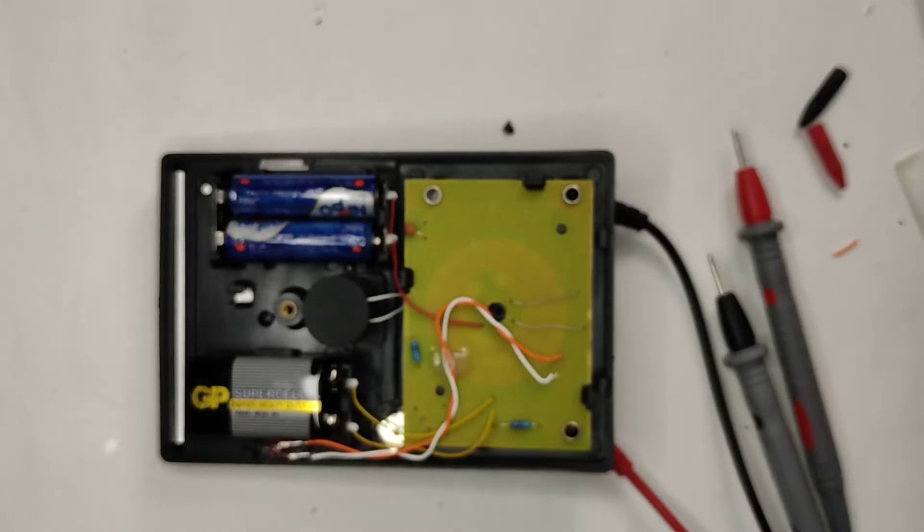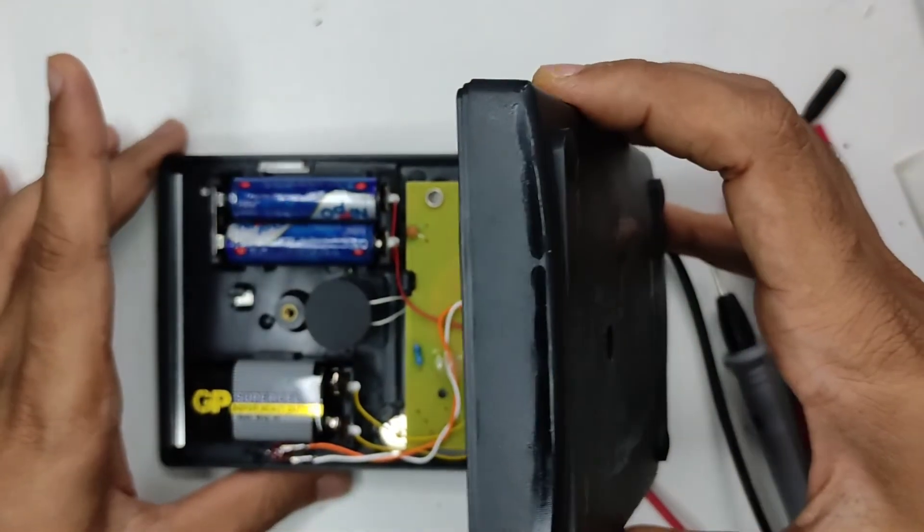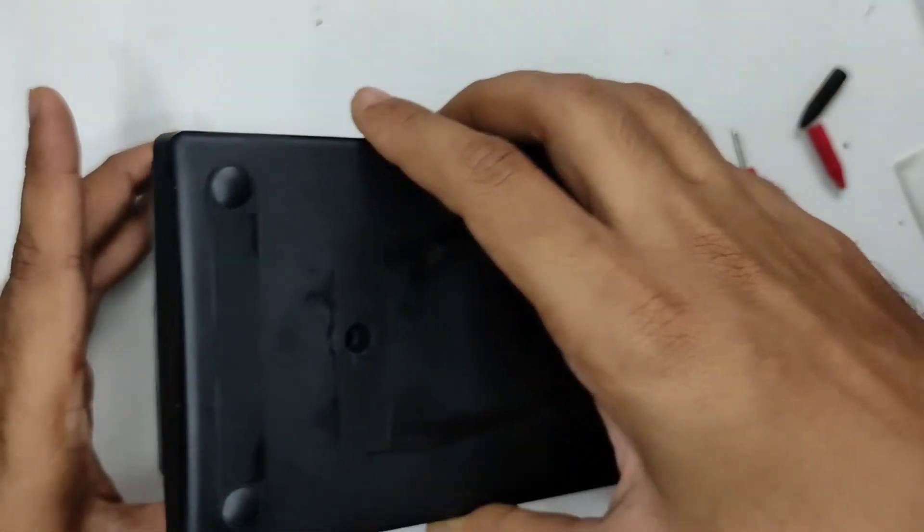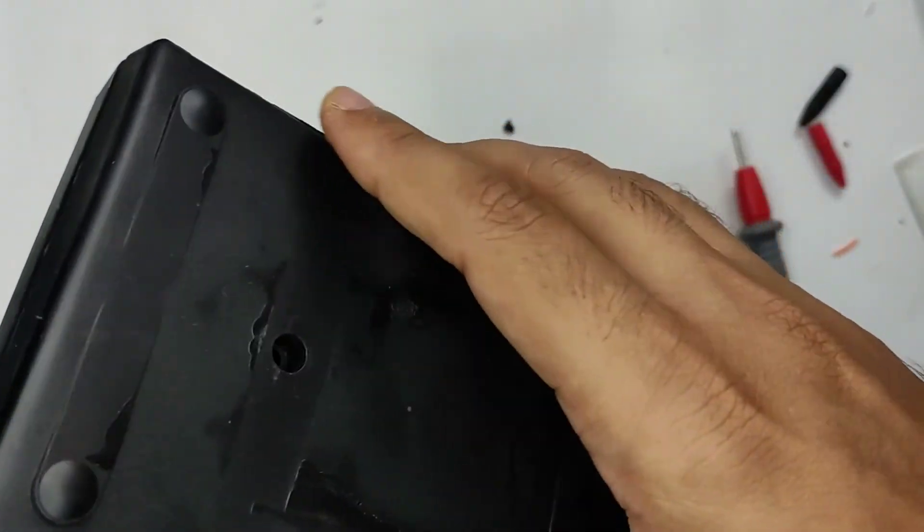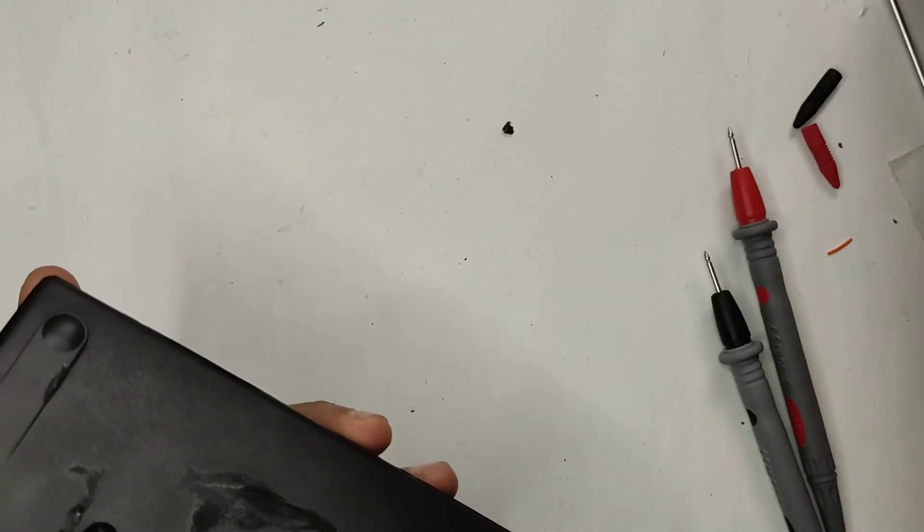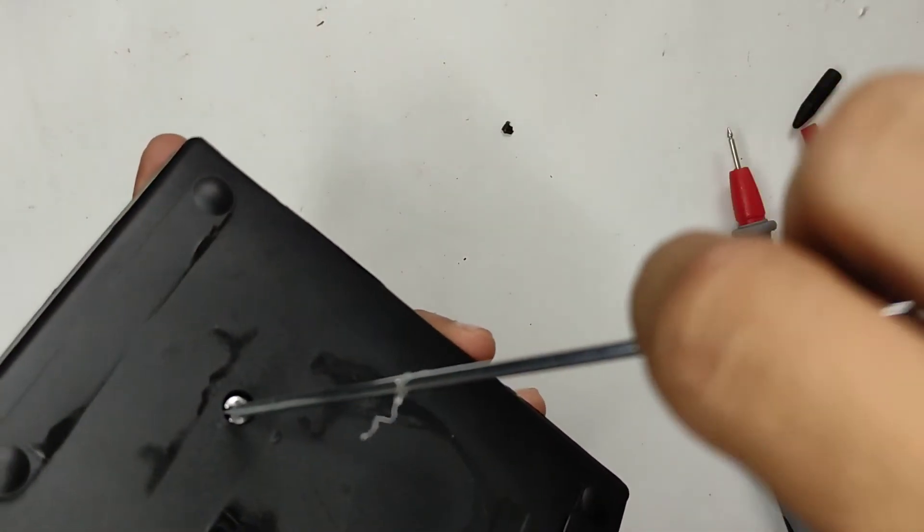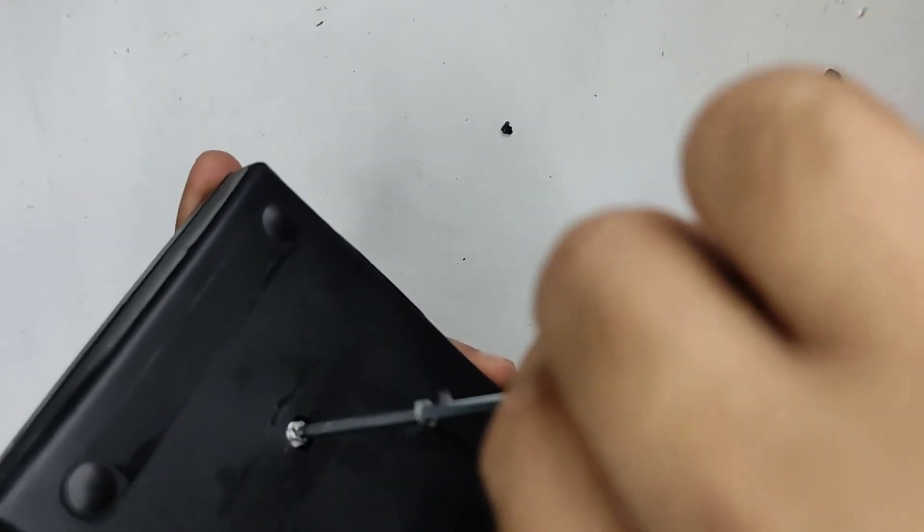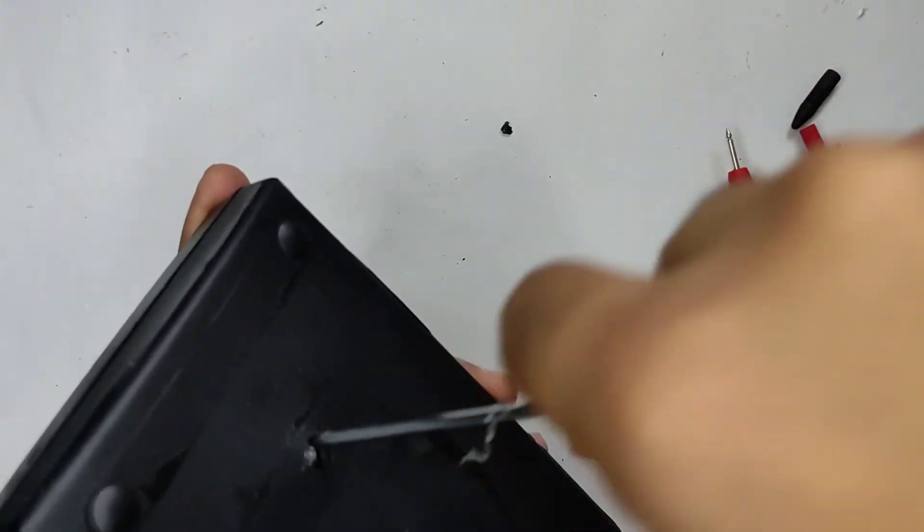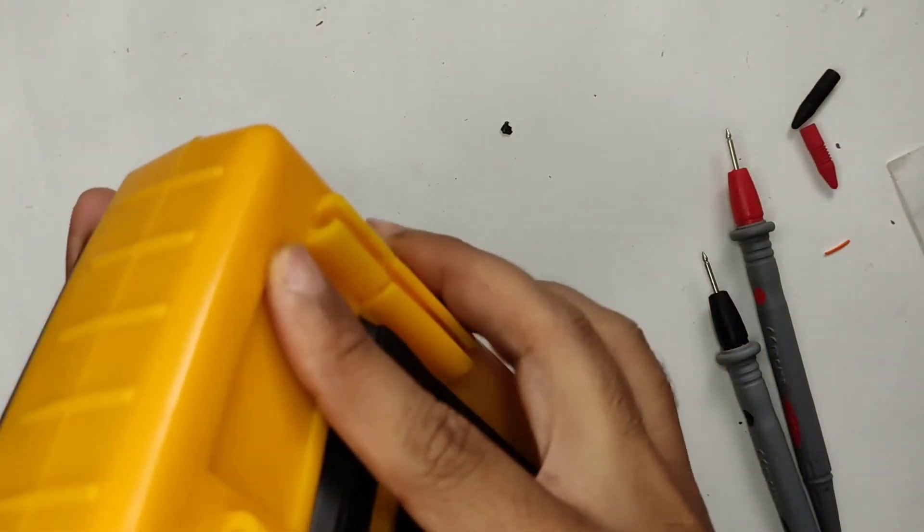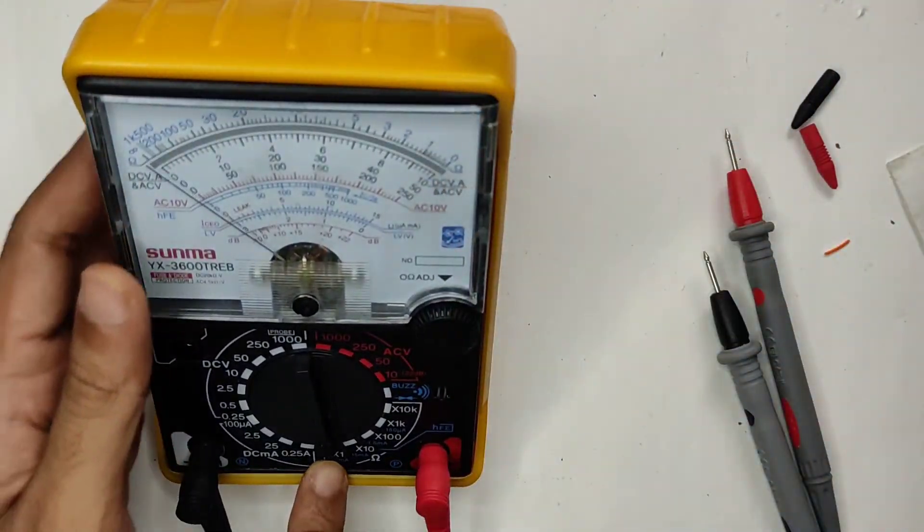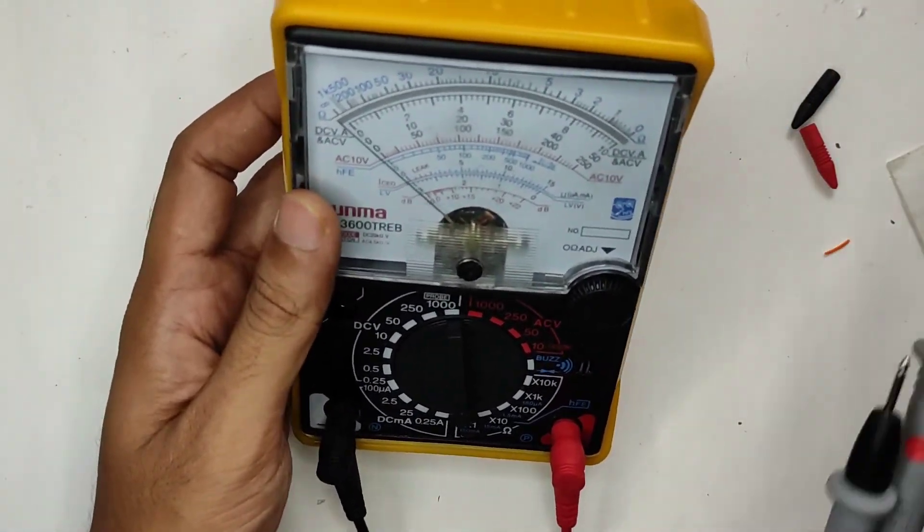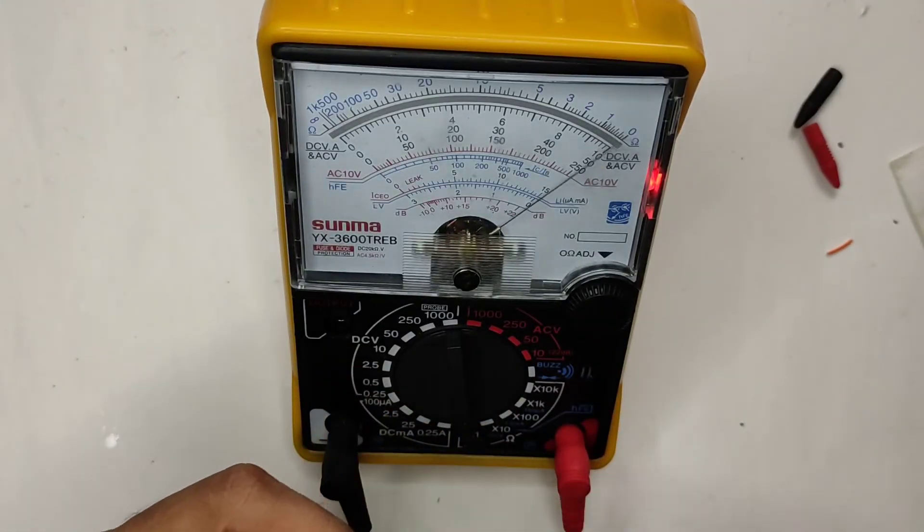So let me show you how it works once I close everything. Let me just shut this back case and lock the screw because our work is almost over, so we can close this with confidence. Still in the continuity mode, if I short it, there you go.